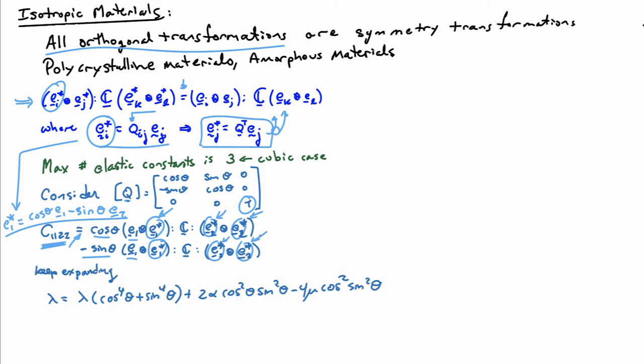If I go through that exercise, what I'll find is that lambda — the off-diagonal terms in the upper-right block, so that's C_1122 — satisfies: lambda equals lambda times cosine-to-the-fourth theta plus sine-to-the-fourth theta, plus two times alpha, where alpha is the diagonal elements in the upper-right block, so C_1111 or C_1212. This gives an interrelationship between the constants.